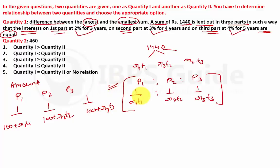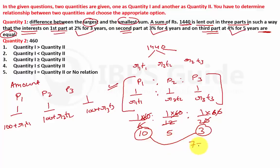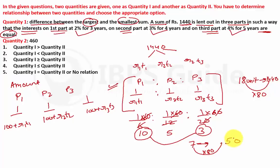Computing: 1/(2×3) : 1/(3×4) : 1/(4×5) = 1/6 : 1/12 : 1/20. Multiplying through by LCM 60: ratio = 10 : 5 : 3. Total = 18 units = ₹1440, so 1 unit = ₹80. The difference between largest (10 units) and smallest (3 units) = 7 units = 7 × 80 = ₹560. Quantity 1 = ₹560.